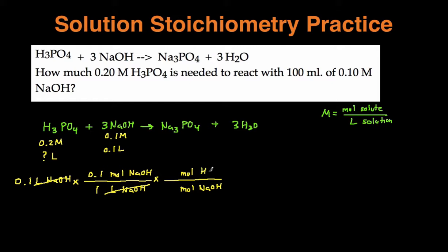And then we're going to put what we're trying to solve for on top, which is moles of H3PO4. And then the numbers you get from looking at the coefficients. So there's three moles of NaOH for every one mole of H3PO4. And then when we do that, the moles of NaOH cancels out.